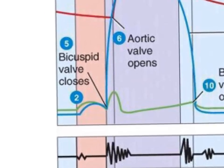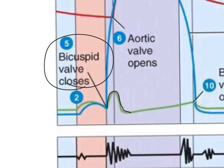I want to point out this little change in the atrial pressure after the bicuspid valve closes. Immediately after the AV valve closes — bicuspid or tricuspid — you're going to see a little peak, an increase in the atrial pressure. This is known as the C wave, and it's due to the valves closing so quickly. There's going to be a very brief increase in pressure during which time the blood is hitting that valve.